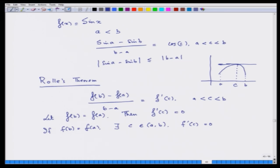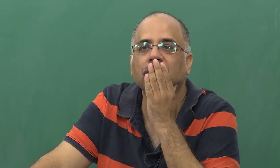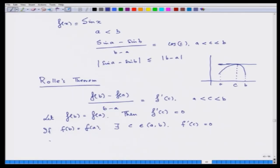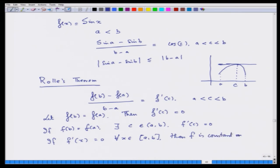You can see how the interesting result of the mean value theorem leads to several more facts. Suppose f'(x) equals 0 throughout the interval [a, b] — what is going to happen? Use the mean value theorem to show that if f'(x) equals 0 for all x in [a, b], then f is constant on [a, b]. I leave this to you to work on. By simple arguments you can get fantastic ideas about the nature of functions.